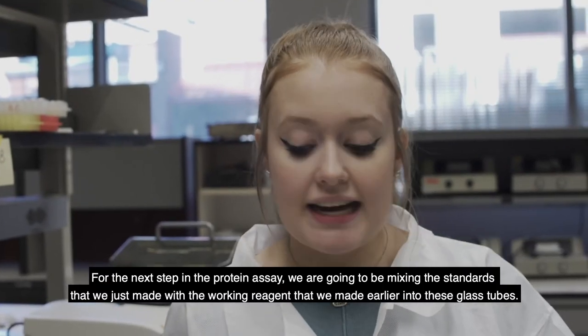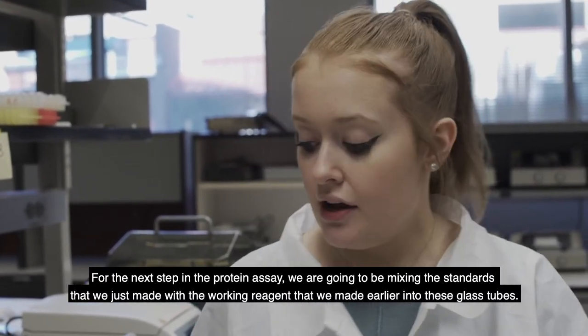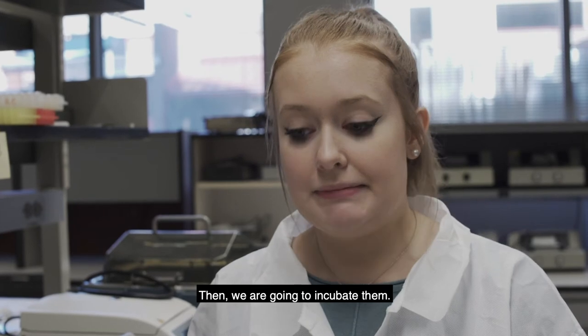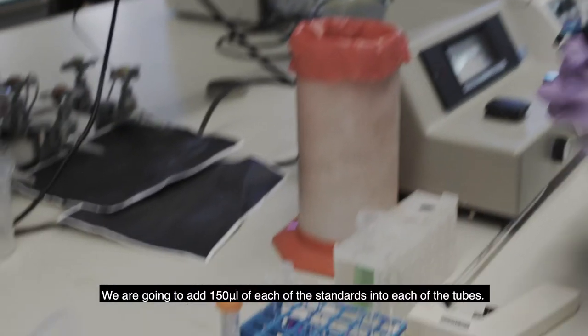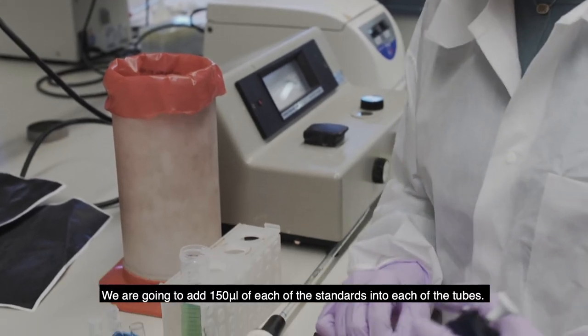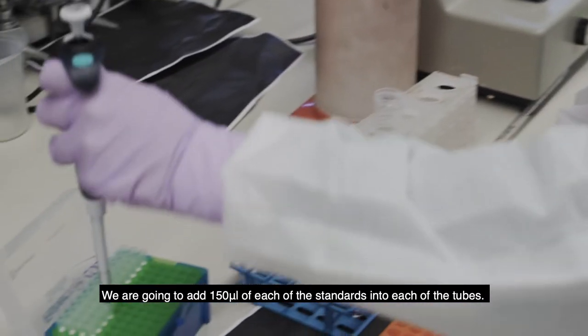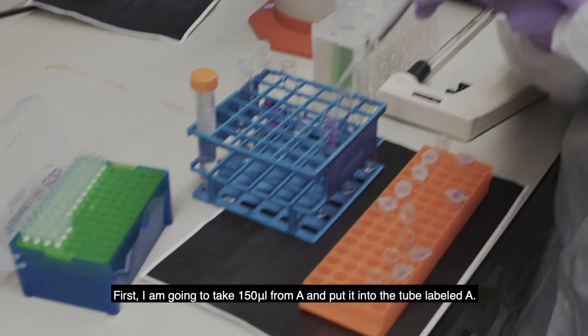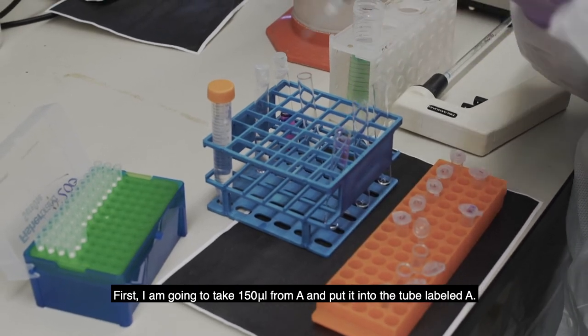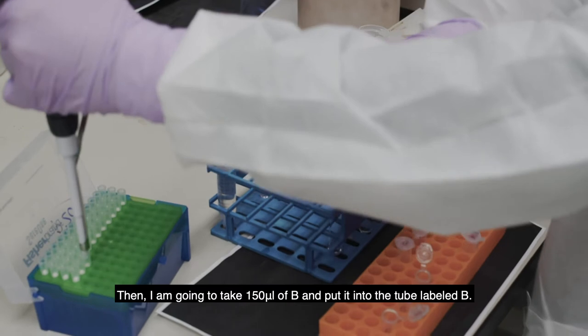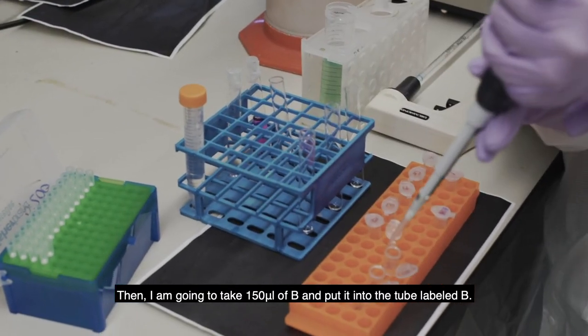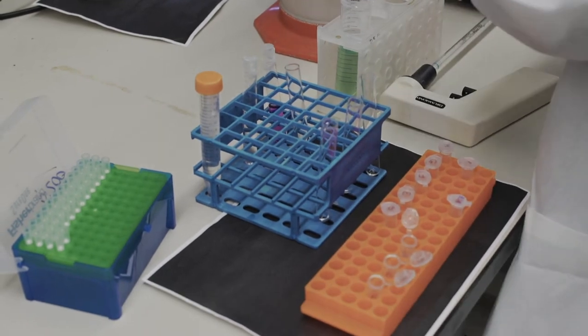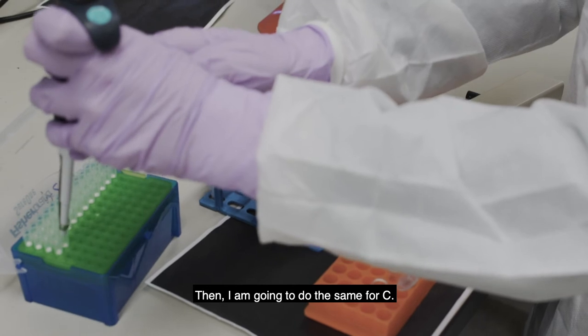So the next step in the protein assay, we're going to be mixing the standards that we just made with the working reagent that we made earlier into these glass tubes, and then we're going to incubate them. We're going to add 150 microliters of each of the standards into each of the tubes. So first I'm going to take 150 microliters from A, and put it into the tube labeled A, and then I'm going to take 150 microliters from B, and then put it into the tube labeled B, and then I'm going to do the same for C. And then now I'm going to take 3 milliliters of our working reagent and put it into the tube.